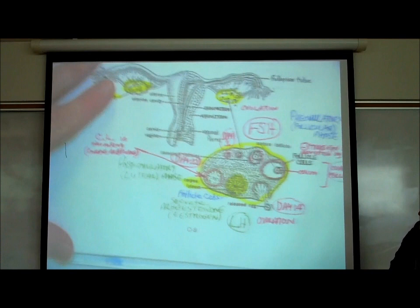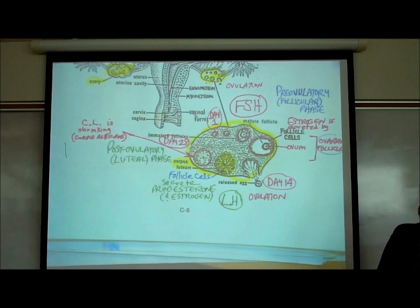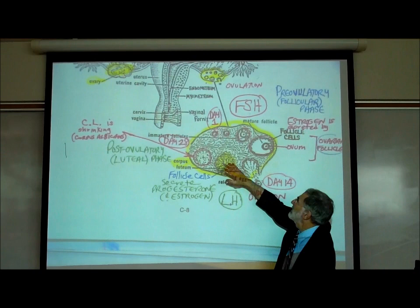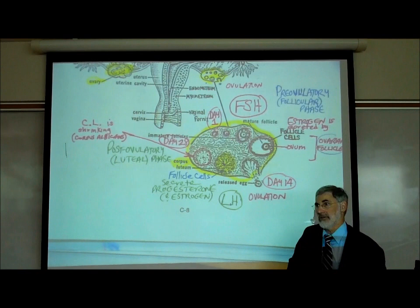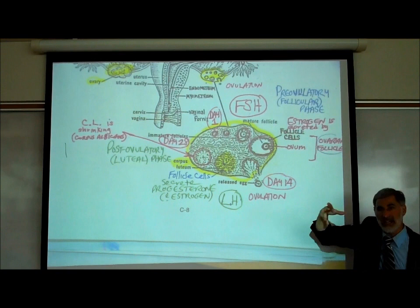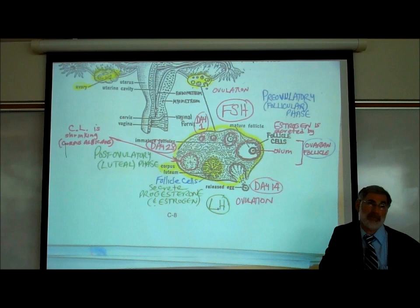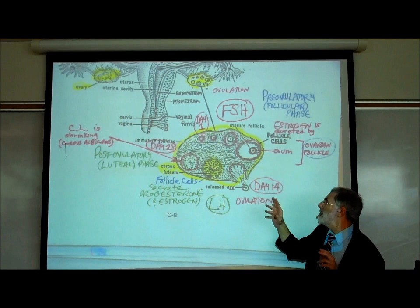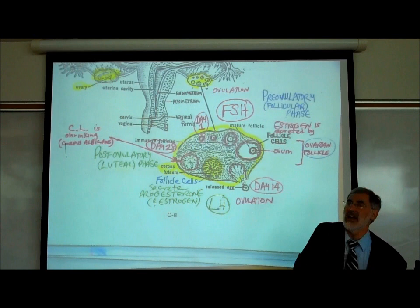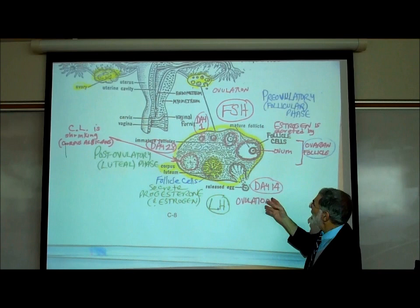To repeat: the pituitary hormone FSH is released for two weeks — it causes the growth of an ovarian follicle and causes the follicle cells to secrete estrogen. Then, beginning around day 14, the pituitary stops secreting FSH and starts secreting LH. LH first causes the egg to pop out — that's ovulation — then continues to be secreted for about two more weeks until around day 28, causing the corpus luteum to secrete progesterone.